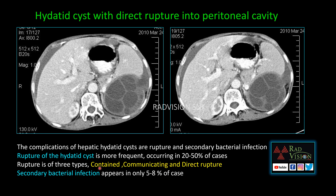Contained rupture is when the endocyst separates from the pericyst and there is fluid accumulation between them, where you can see detached laminated membranes. Communicating hydatid cyst is when the hydatid cyst communicates with the biliary tree or bronchial tree. Direct rupture is when the hydatid cyst ruptures into the pleural cavity or peritoneal cavity.